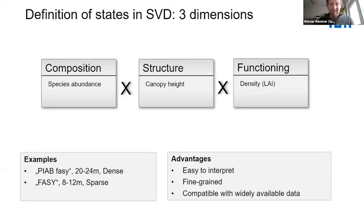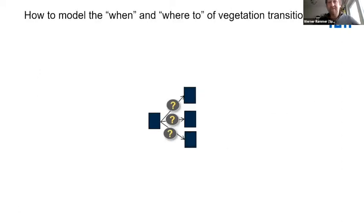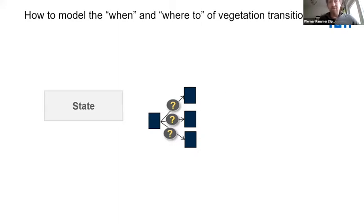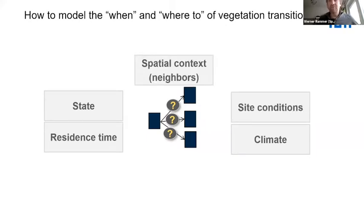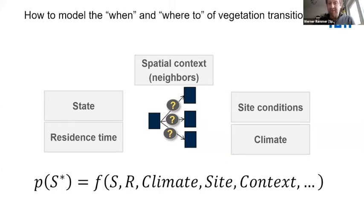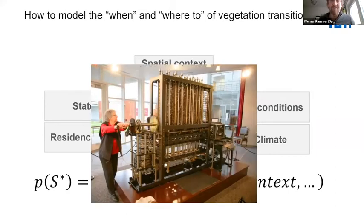You can have hundreds and thousands of states in such a system. The question is how to model transitions between those potential states. Many factors influence transition probabilities: the current state and current residence time (how long a cell has been in a certain state), environmental drivers such as climate or site conditions, and the spatial context of neighboring cells. Taken together this is a rather complex equation, and for this equation we needed some kind of machinery — in our context, that machinery is deep learning.